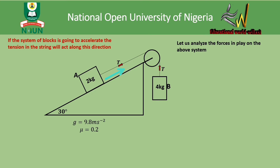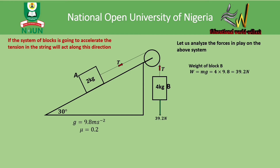For block B, the 4 kg mass, the block is supposed to fall downwards, but the tension in the string is holding the block so that it doesn't fall freely under gravity. The weight of block B equals mass times acceleration due to gravity, which gives us 39.2 newtons acting downwards.